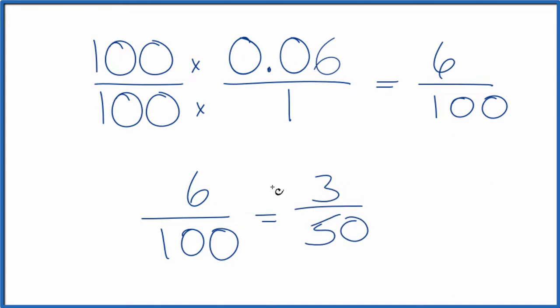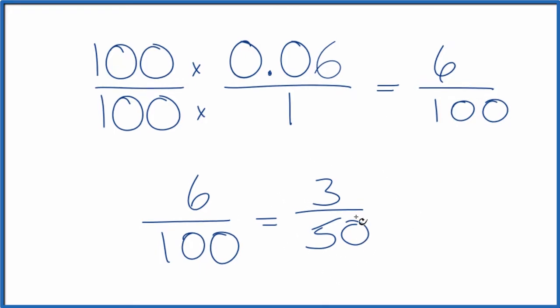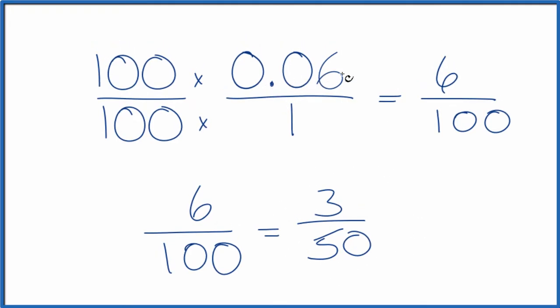3 over 50 can't be simplified any further. So when we convert the decimal 0.06 to a fraction, we end up with 3 fiftieths. If you divide 3 by 50, you get 0.06.